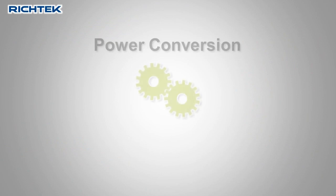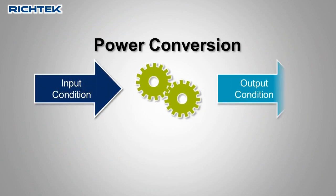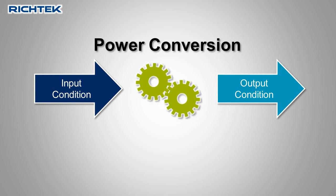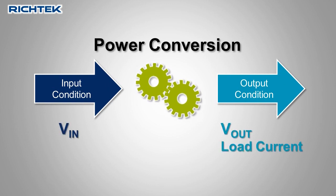Power conversion is all about input and output conditions. Component selection depends a lot on input voltage, output voltage, and output current.